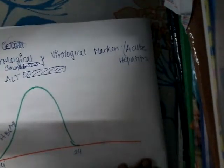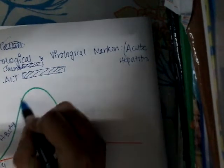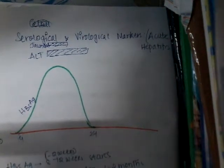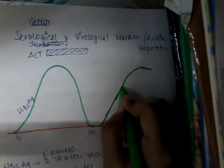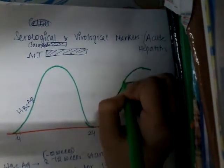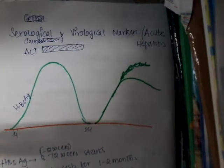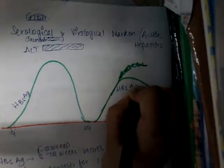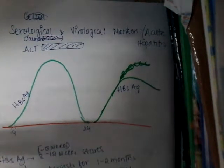After HBsAg disappears, you can see hepatitis B surface antibody (anti-HBs) coming into picture. Once the antigen disappears, anti-HBs comes up — it will not be as high — and some amount of it will persist for a long time. Anti-HBs starts after the disappearance of HBsAg.